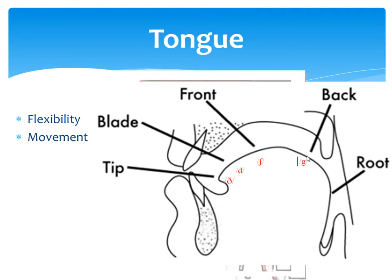Moving the back of the tongue against the soft palate, we can produce sounds like /g/. Moving the very back of the tongue against the back of the roof of the mouth, we can produce uvular sounds.